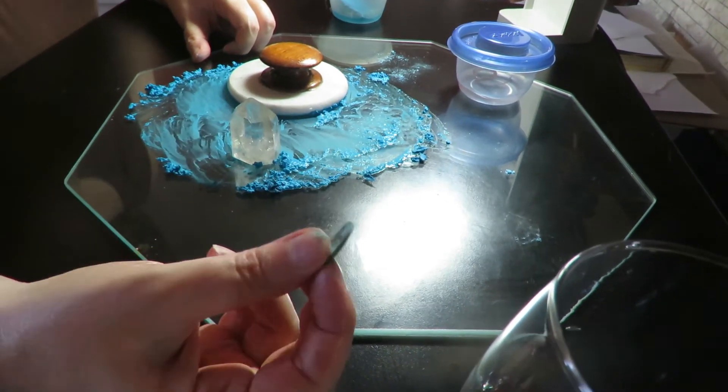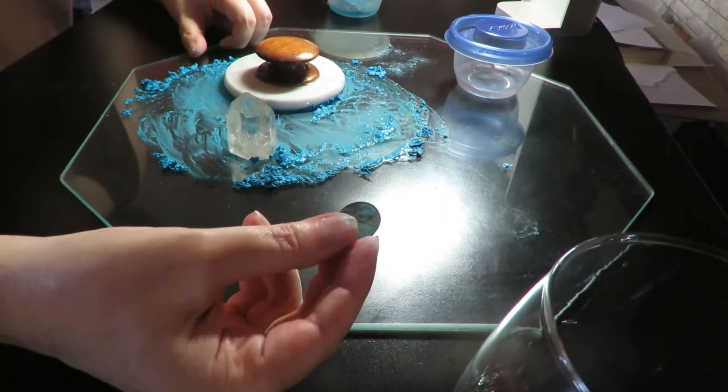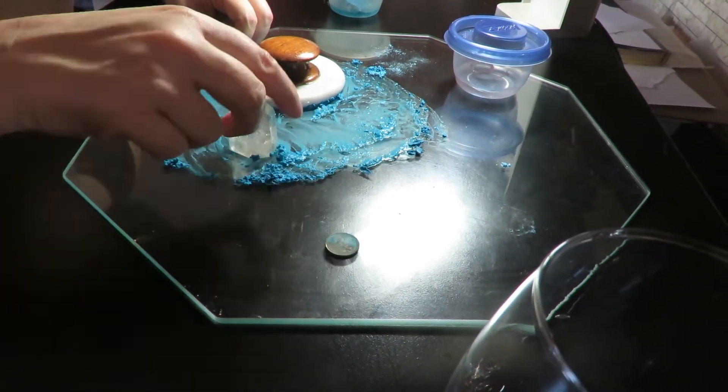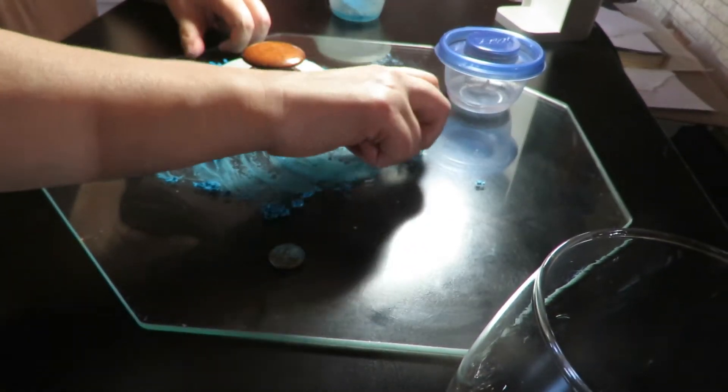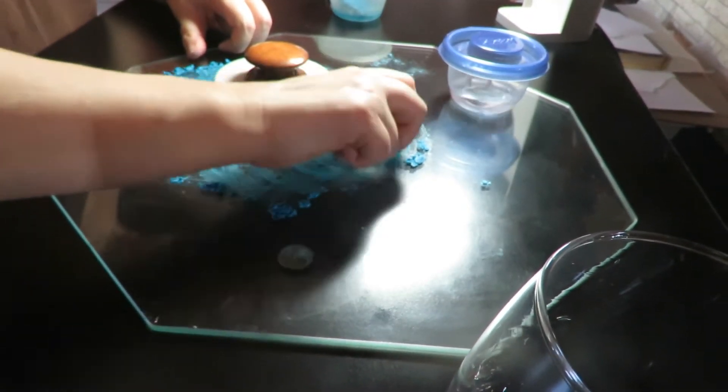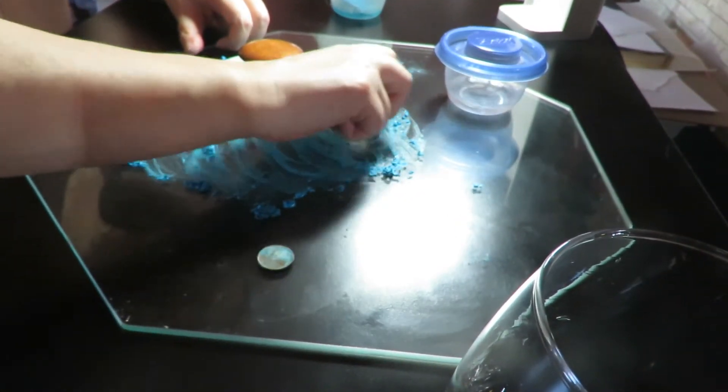Pennies were pure copper until 1982. So you can also use pennies to make the verdigris if you want to. Although the federal government might not be too happy with you. On the other hand, they might not care.